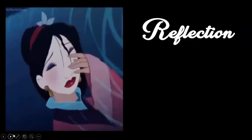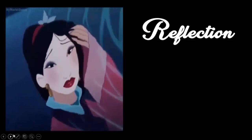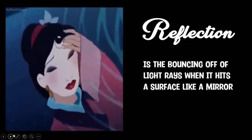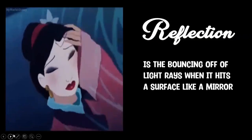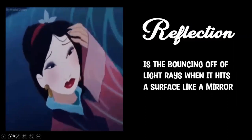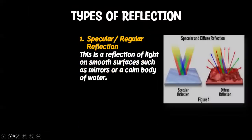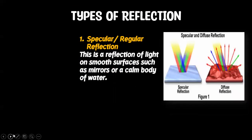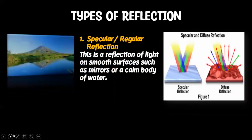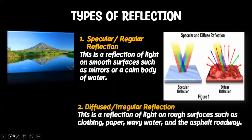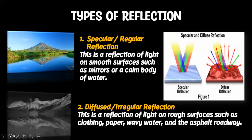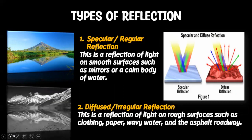Have you ever seen your reflection on a mirror? Reflection is the bouncing back of light rays when it hits a surface like a mirror. We have two types of reflection. First is the specular or regular reflection, which refers to the reflection of light on smooth surfaces such as mirrors or a calm body of water. The second type is known as diffused or irregular reflection — the reflection of light on rough surfaces such as clothing, paper, wavy water, and asphalt.